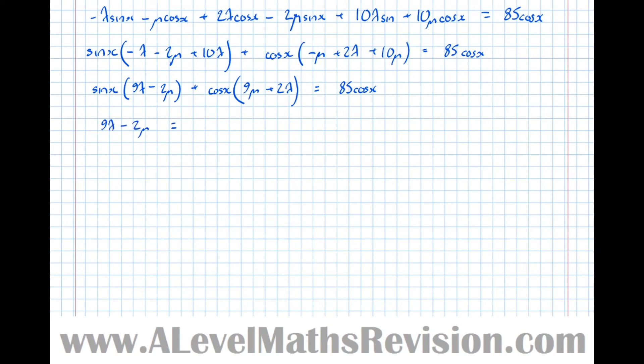which is equal to the coefficient of sine x on the right-hand side, which is 0. So then looking at cos x, we get 9 mu plus 2 lambda. So 9 mu plus 2 lambda equals 85.